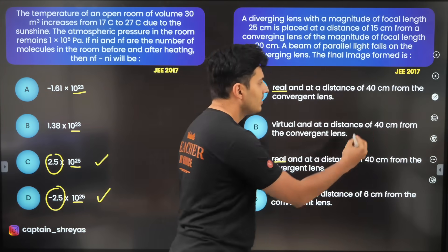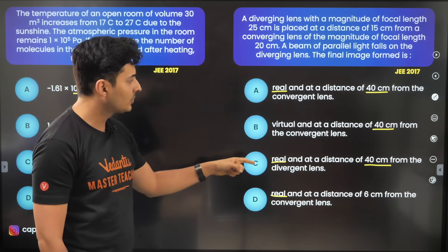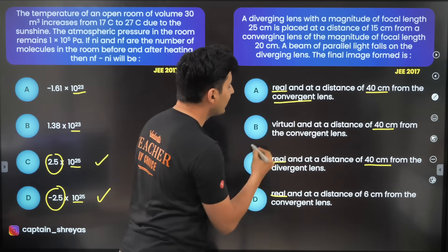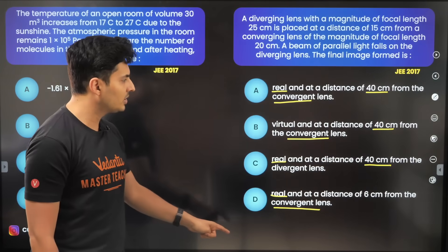I can also see this distance of 40 centimeters in these three options. Also I can see convergent in these three options.